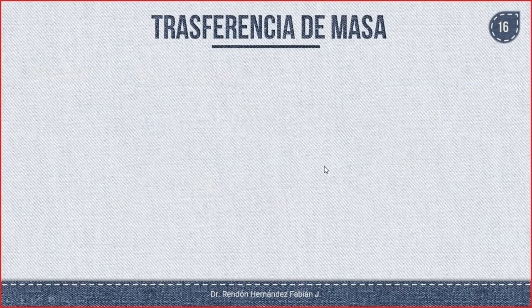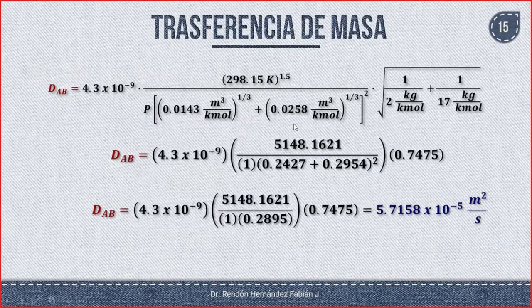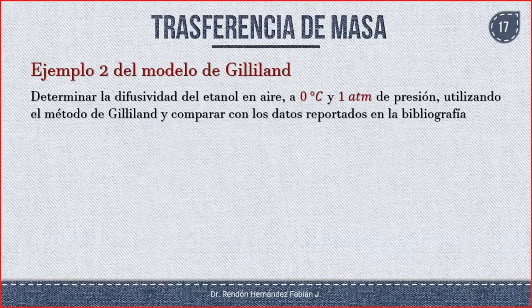Es muy fácil trabajar con estos modelos. Ya vimos de dónde están saliendo los valores de los volúmenes. Otro ejemplo: determinar la difusividad del etanol en aire. El compuesto A es el etanol y el compuesto B es el aire. Esto se pide a cero grados Celsius y una atmósfera de presión, utilizando el método de Gilliland y comparando datos reportados en la bibliografía.